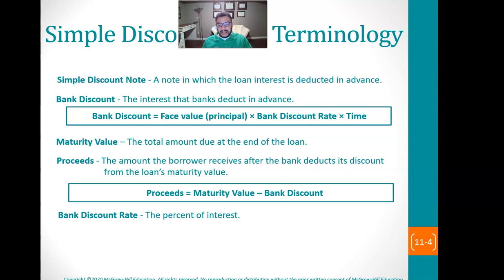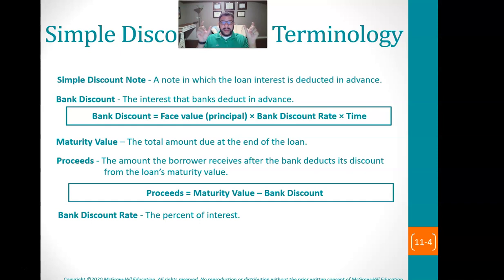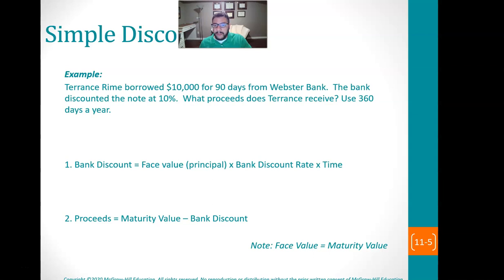So the proceeds are the maturity value minus the bank discount. Before in chapter 10, P times R times T — that rate would tell us our interest amount. That was the formula for interest. So if I borrowed $1,000 at 10% for one year, that's $100, and then I would have to pay back that $1,000 plus $100. But here, we figured out the interest is $100 but we're going to deduct that now. So when we give you the loan, you're only going to get $900.